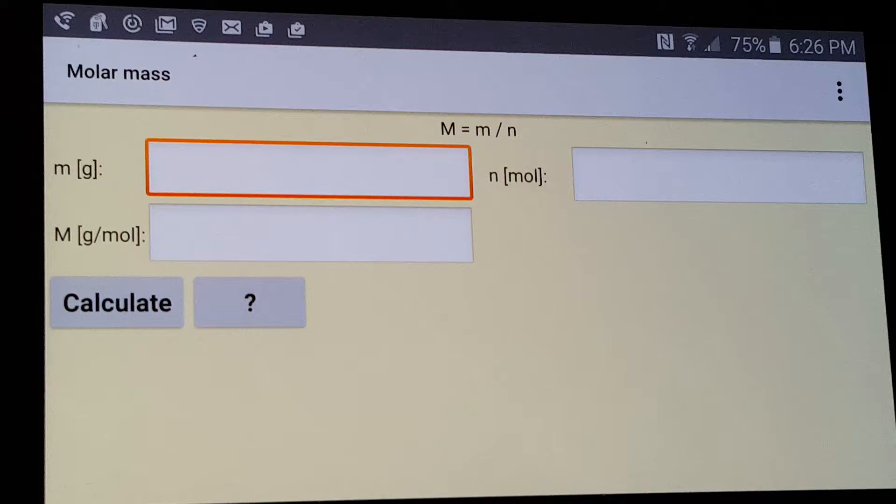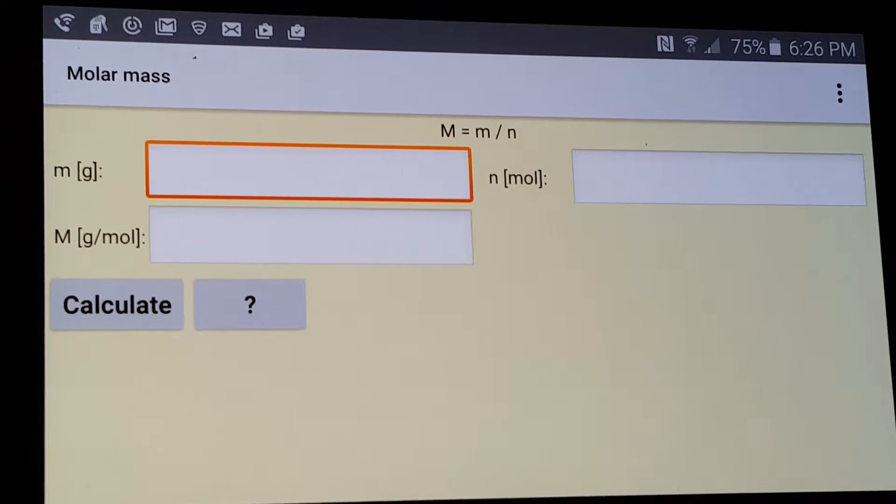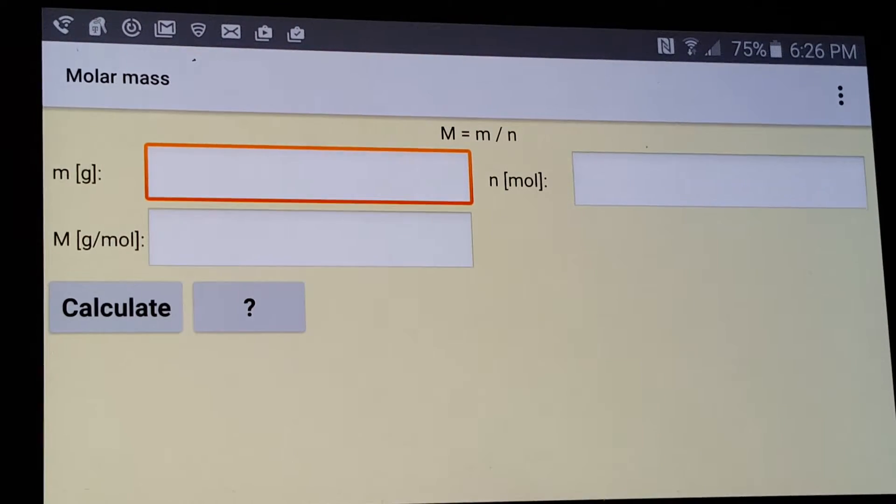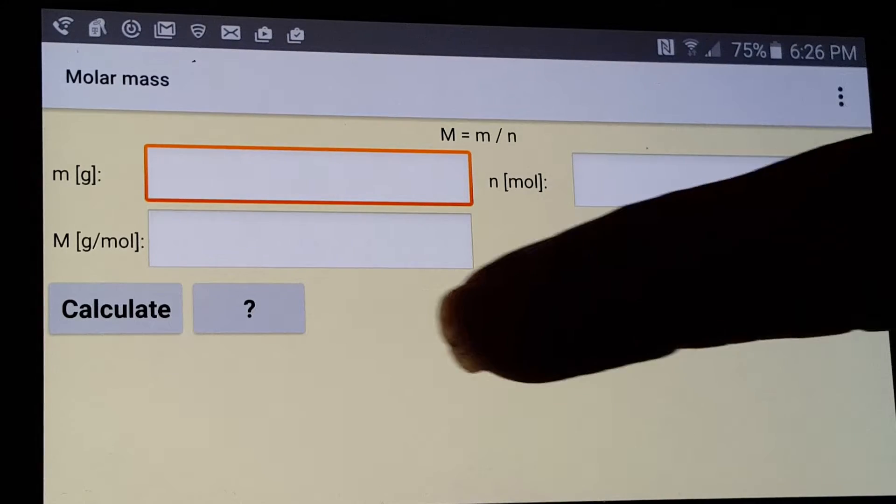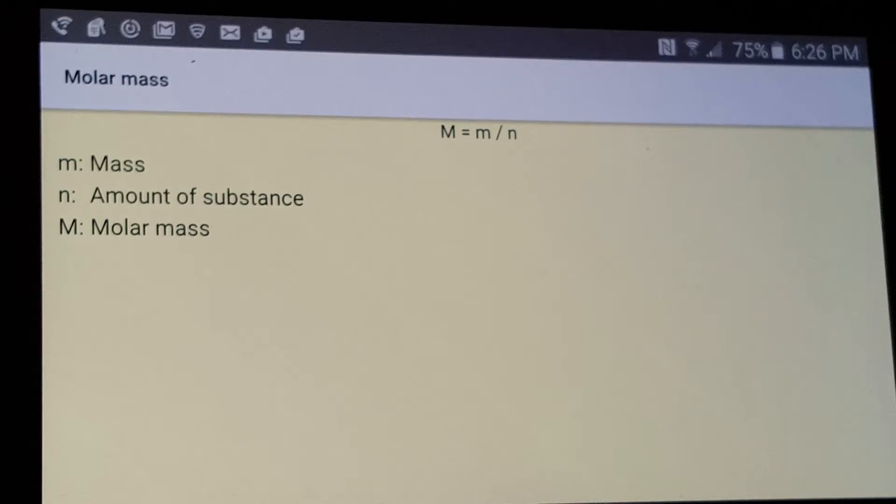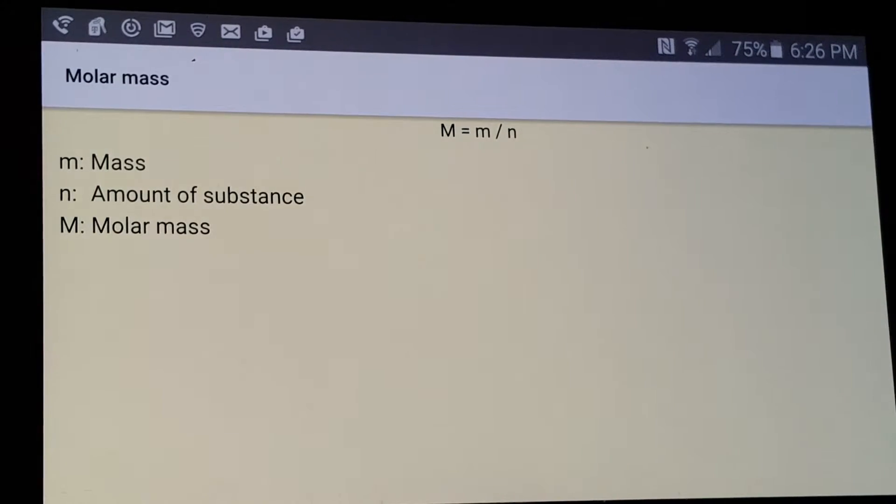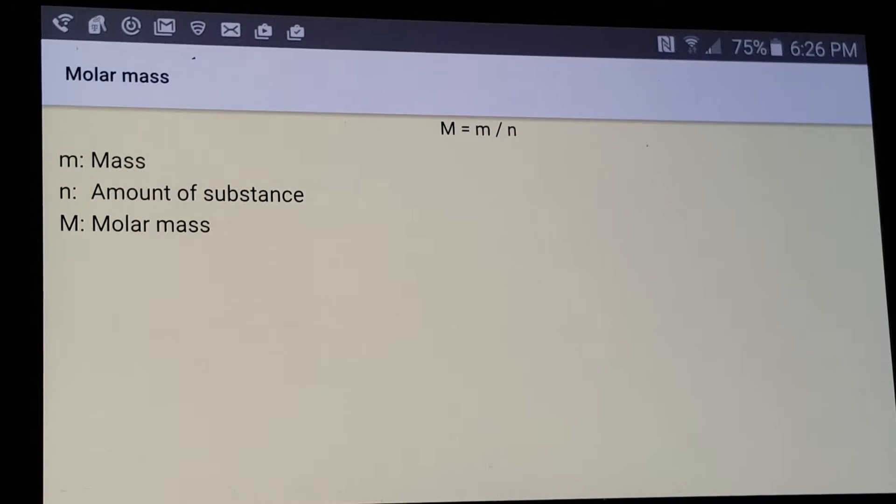Again, you have the formula at the top of the screen. And if you want more of an explanation, you tap the question key here. And it gives you the variables in the formula.